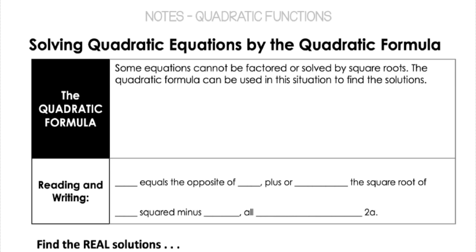We've talked before about factoring as a method of solving, and square rooting as a method. Some equations, though, we can't do that with either of them — they have an x squared and an x term, but they're not factorable.